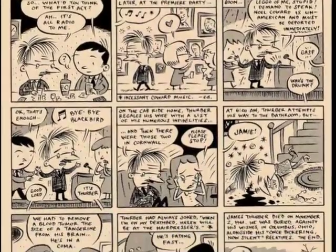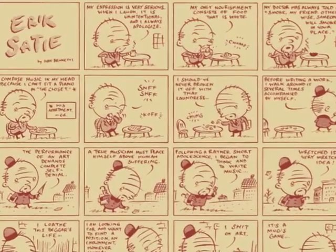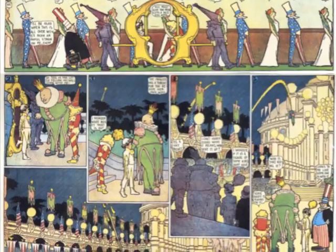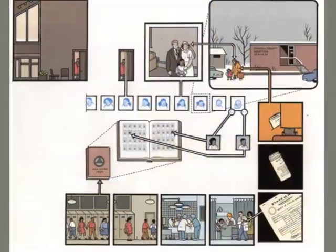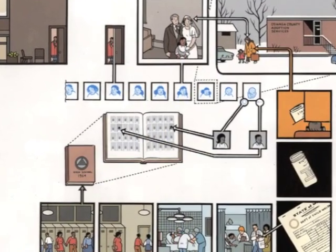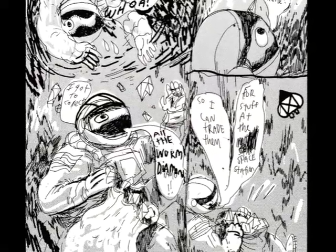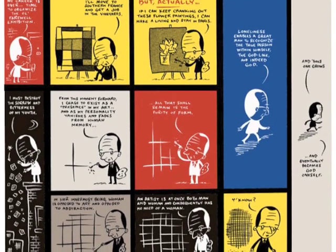You can use a grid system like Ivan Brunetti's here, where every panel is exactly the same size and carries the same weight. You can start to stretch those panels lengthwise and heightwise a little, so it becomes a sort of puzzle on the page. You can turn it into a sort of diagram like Chris Ware does here. You can make the entire page a single panel, or you can be a lot more freeform, like Mickey Z. In short, there's a huge variety of ways to approach designing the page or the screen or whatever you're working on. Let's look at some examples.